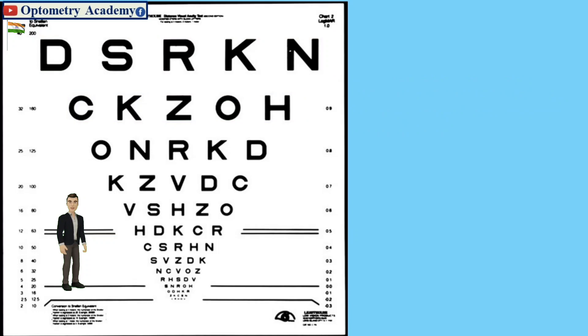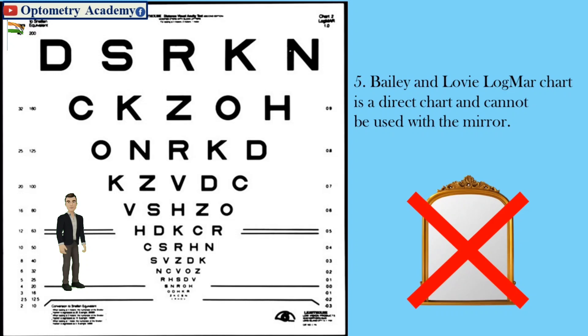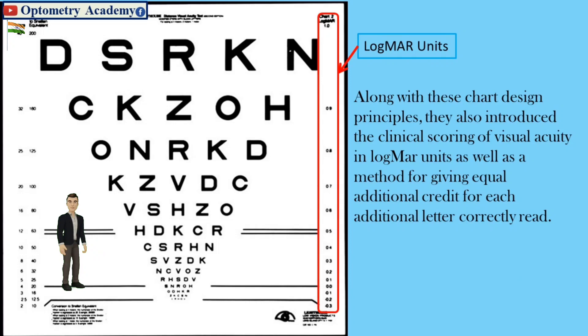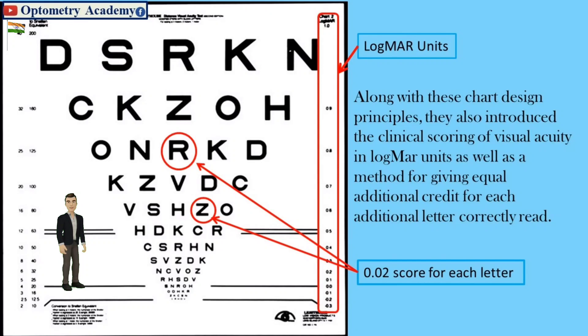Fifth, Balian Lobby LogMAR chart is a direct chart and cannot be used with the mirror. Along with these chart design principles, they also introduced the clinical scoring of visual acuity in LogMAR units as well as a method for giving equal additional credit for each additional letter correctly read.